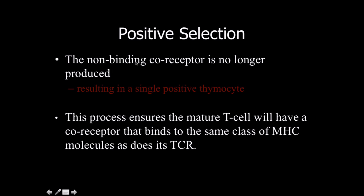In positive selection, the non-binding co-receptor is no longer produced. We're selecting for whether a thymocyte is going to become CD8 or CD4. For example, if we're binding to an MHC molecule and CD8 works great but CD4 not so much, that determines whether it becomes a cytotoxic T cell or a helper T cell. This process ensures that the mature T cell will have a co-receptor that binds to the same class of MHC molecule as its T cell receptor.